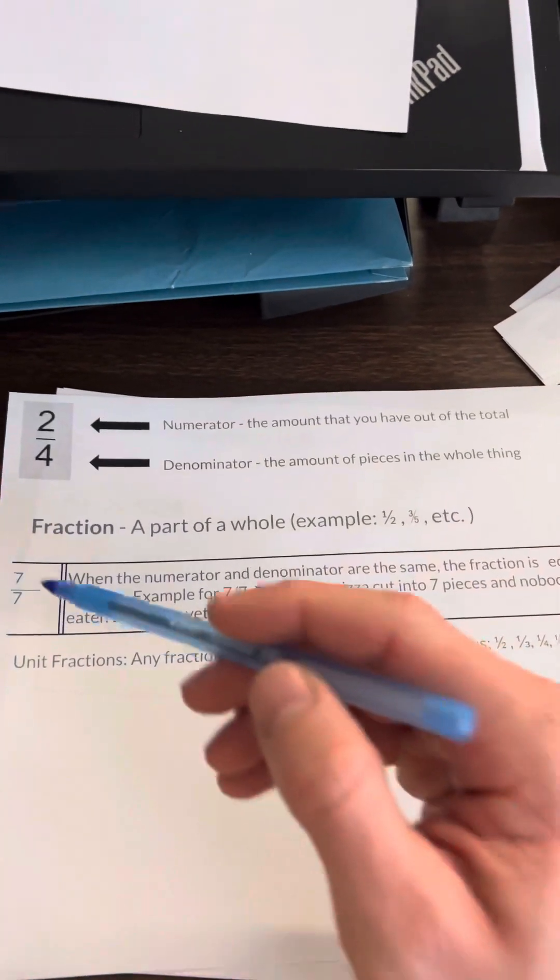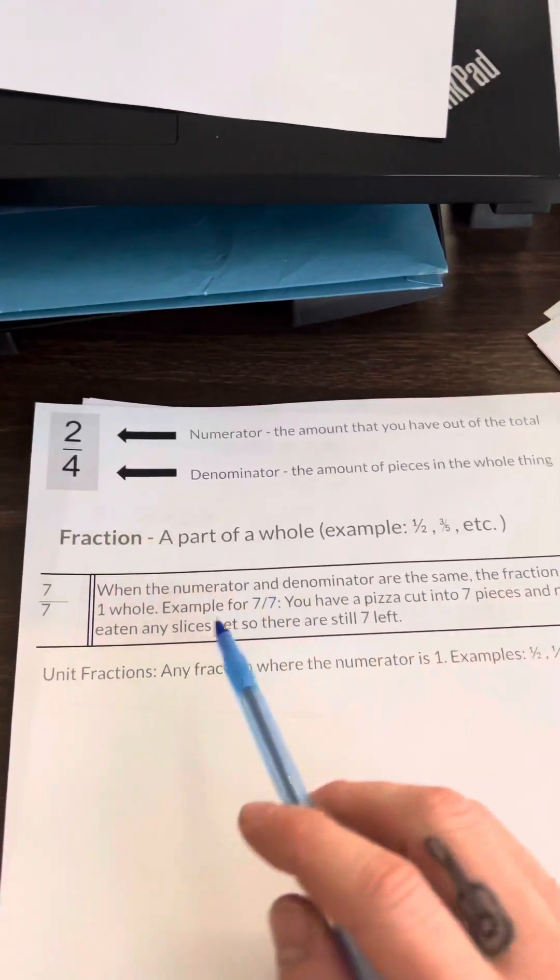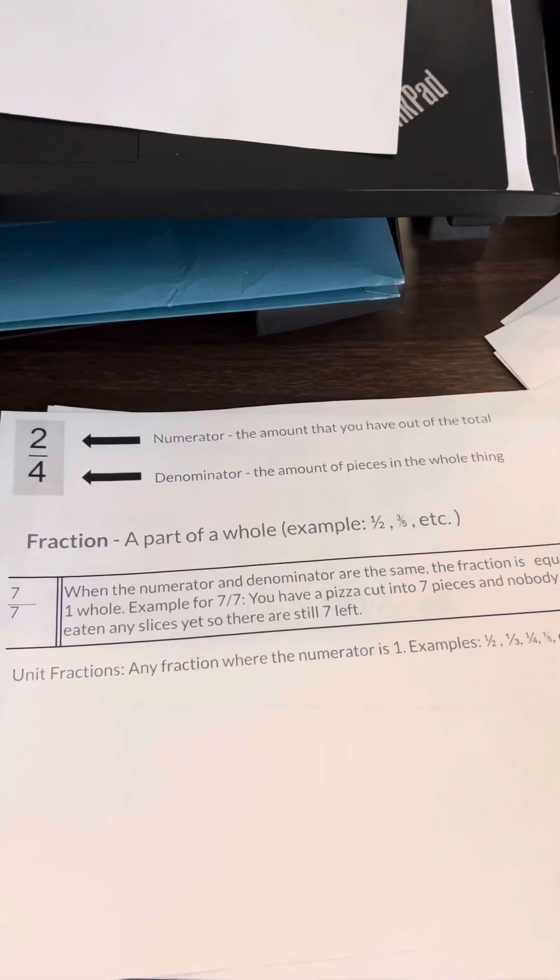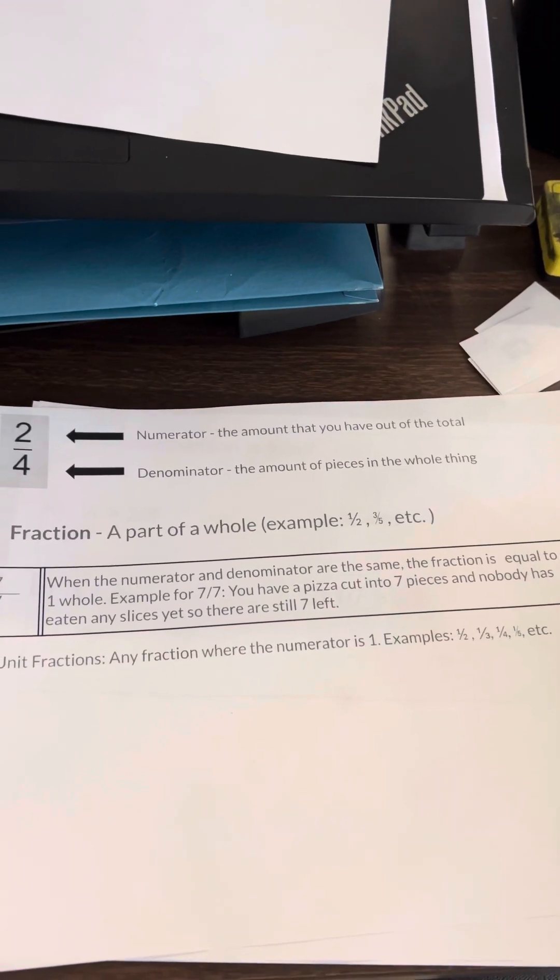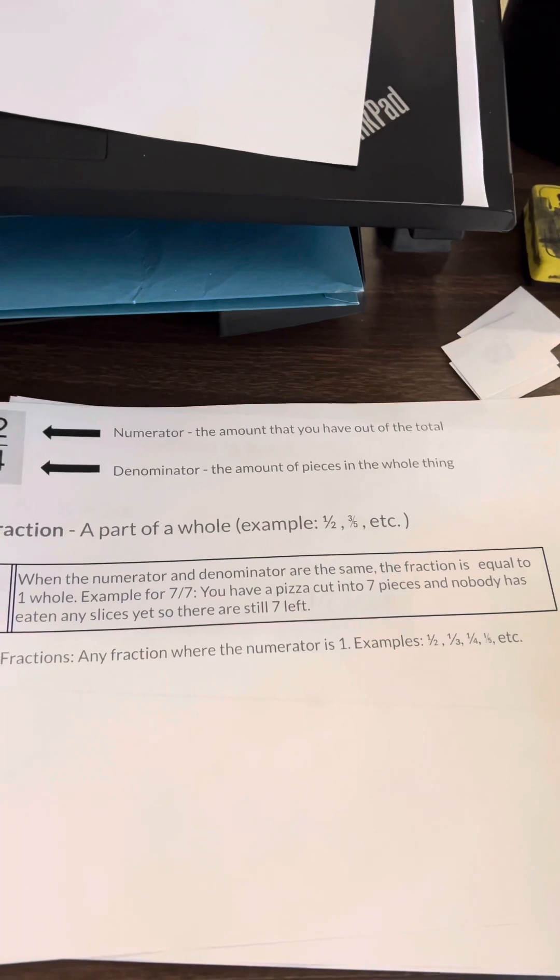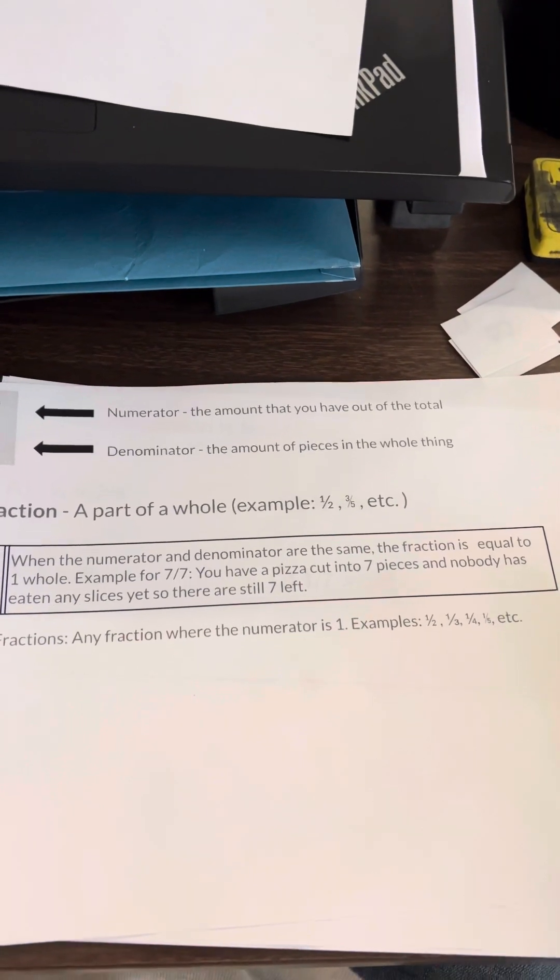Here we have the fraction 7/7ths. When the numerator and denominator are the same, the fraction is equal to one whole. Example: 7/7ths, you have pizza cut into seven pieces and nobody has eaten any slices yet, so there are seven left.